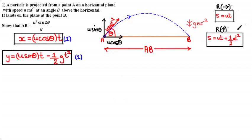Equation 2 comes from the vertical Suvat equation s = ut + ½at², where y represents vertical displacement, u sine theta is the initial vertical velocity for a particle projected at speed u and angle theta, and the acceleration is taken as minus g since downwards is negative. These are essentially ready-made Suvat equations with the variables and constants already built in.